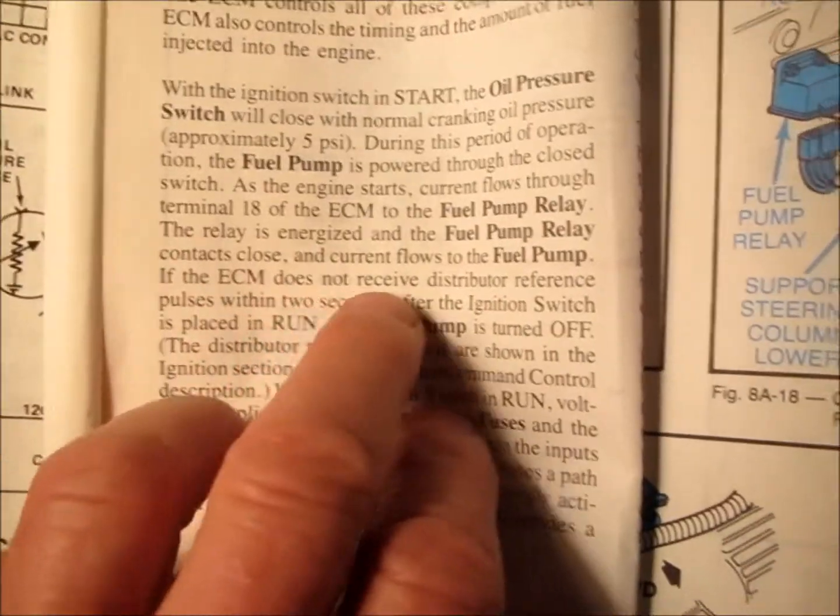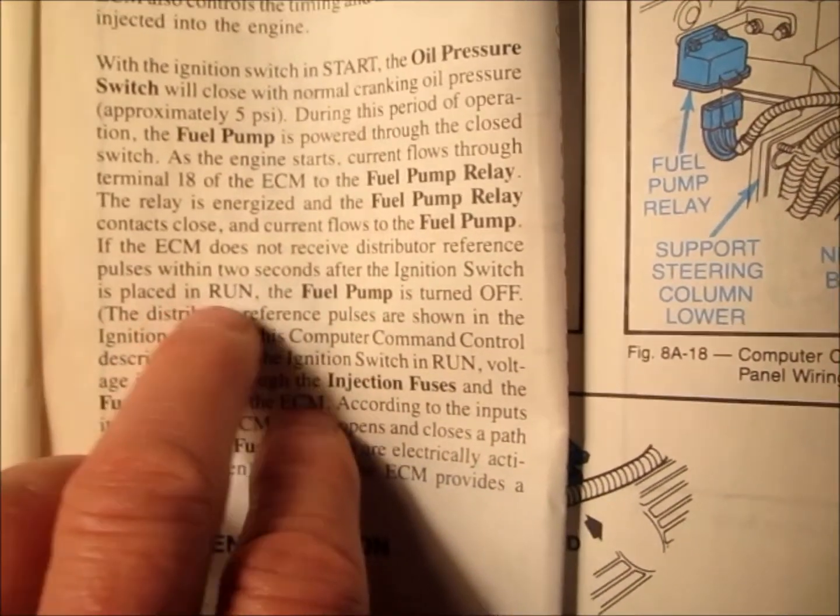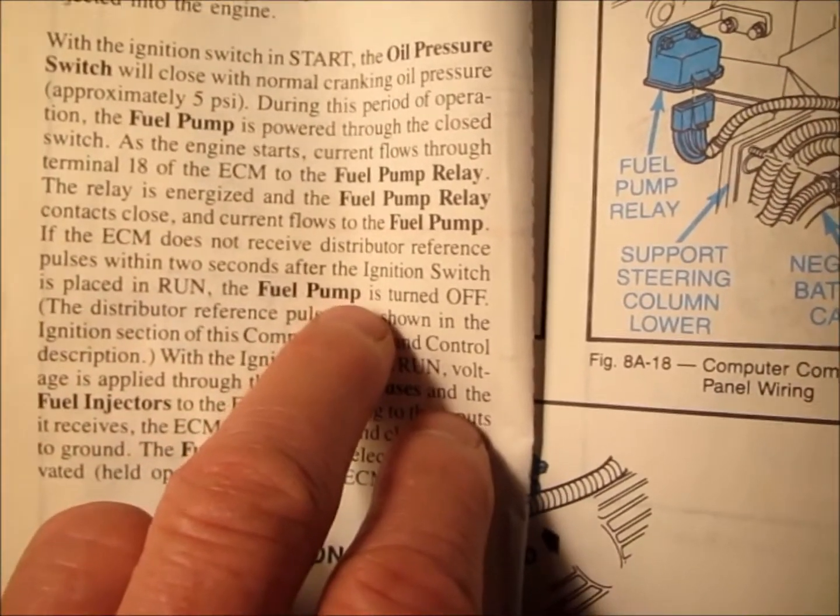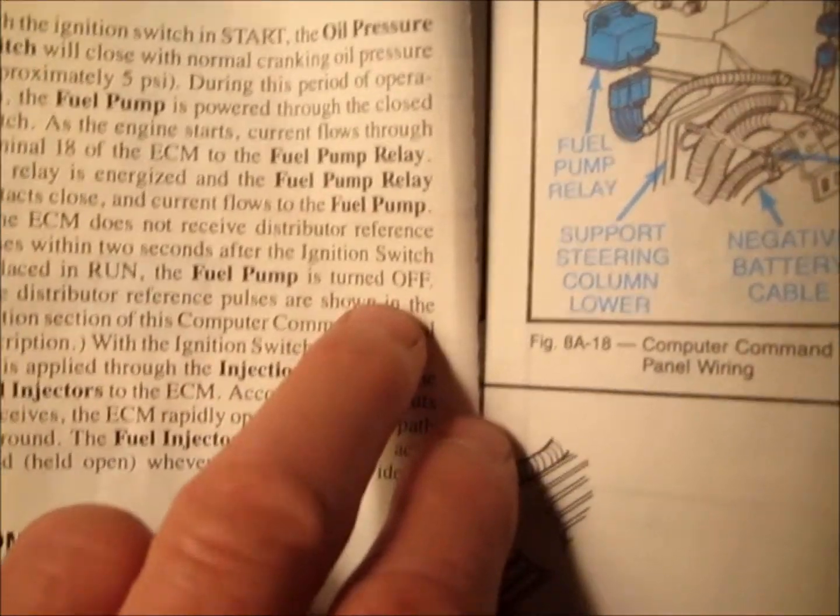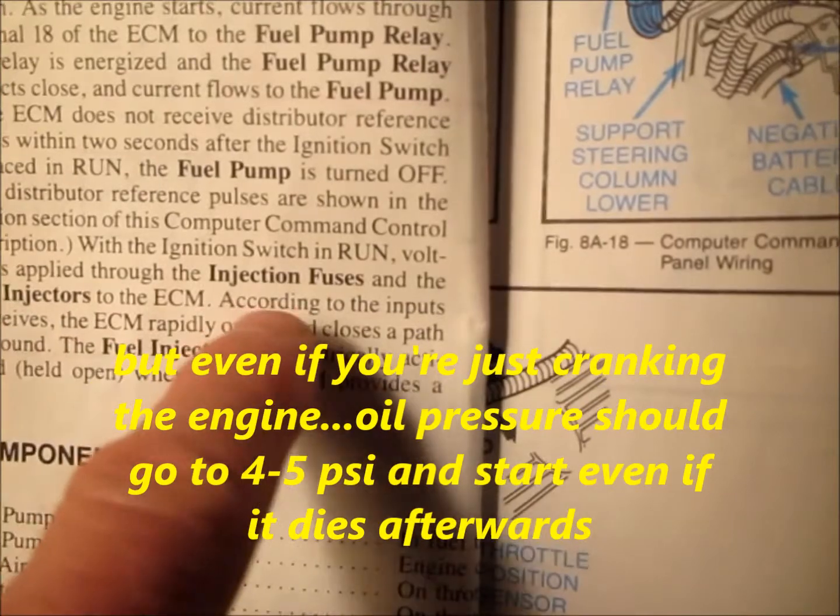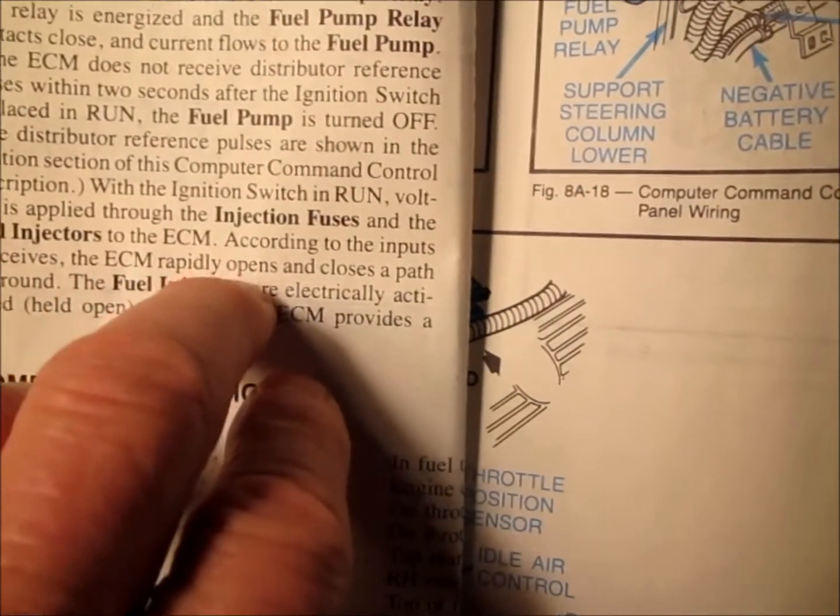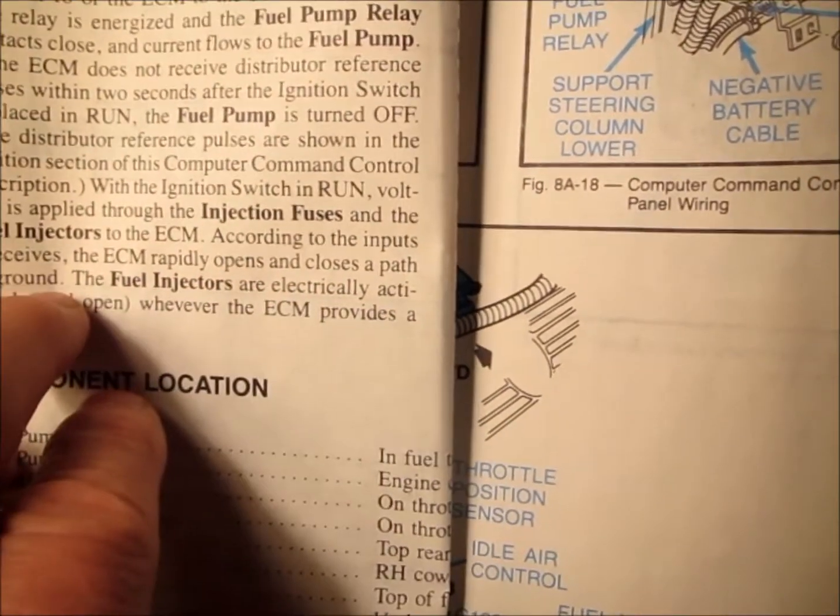The ECM does not receive distributed reference pulses within 2 seconds after the ignition switch is placed in run, the fuel pump is turned off. With the ignition switch in run, voltage is applied through the injection fuses and the fuel injectors to the ECM. The ECM rapidly opens and closes a path to ground.